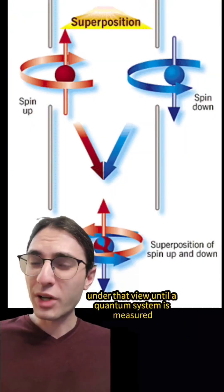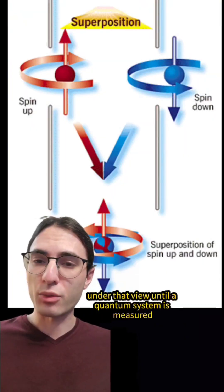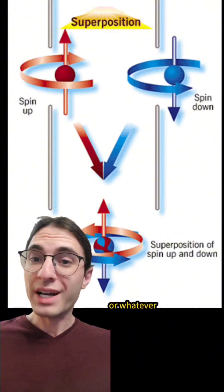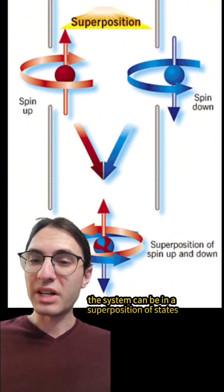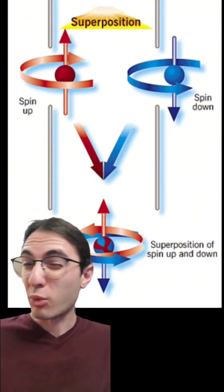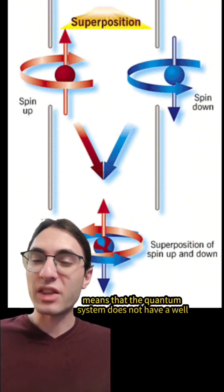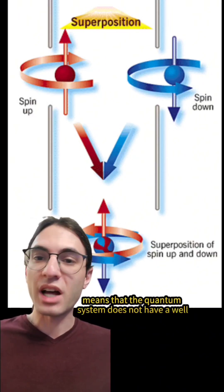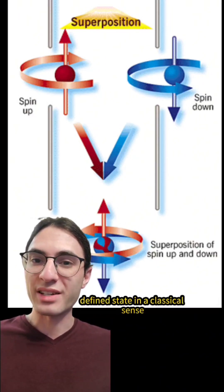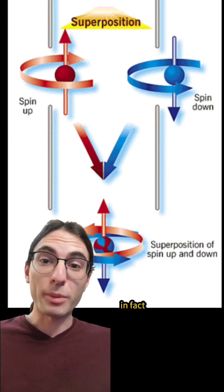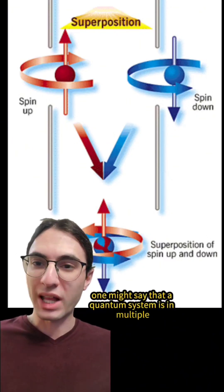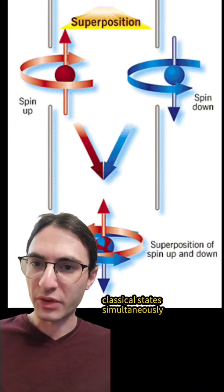Under that view, until a quantum system is measured — whether by a person, a camera, or whatever — the system can be in a superposition of states. Put roughly, this means that the quantum system does not have a well-defined state in a classical sense. In fact, one might say that a quantum system is in multiple classical states simultaneously.